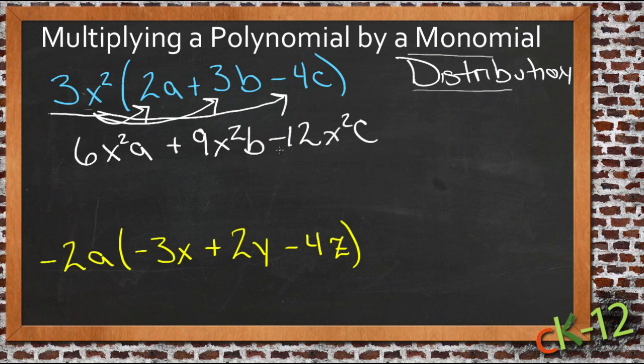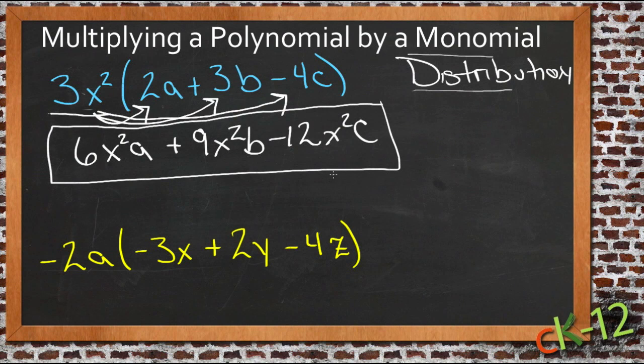And since none of these are exactly the same term, we have x squared a, x squared b, x squared c. We're done, we can't simplify any farther. And that is our answer.